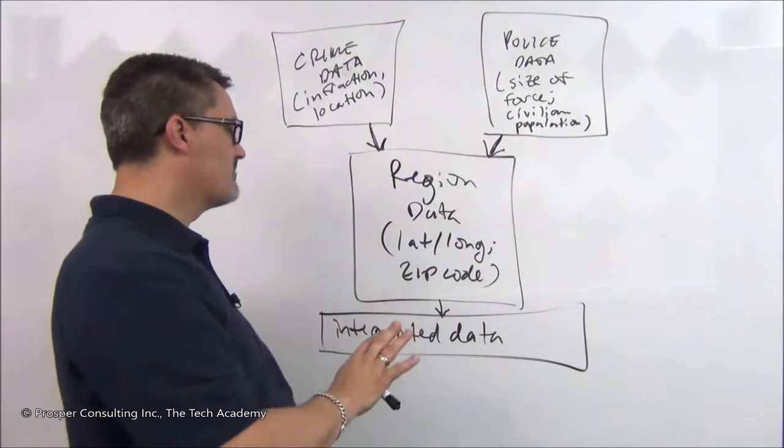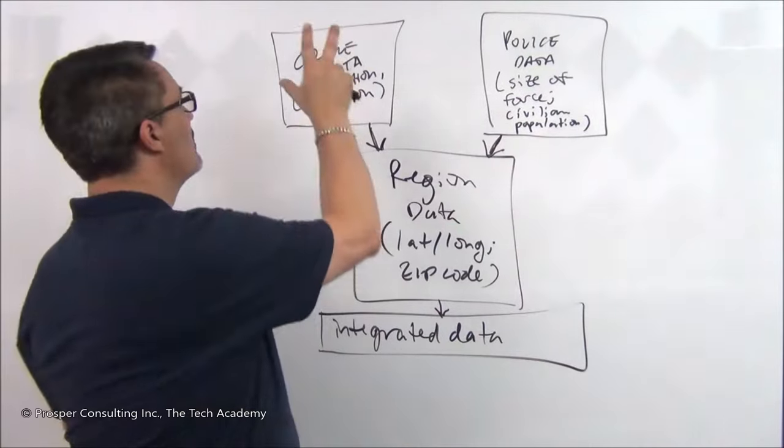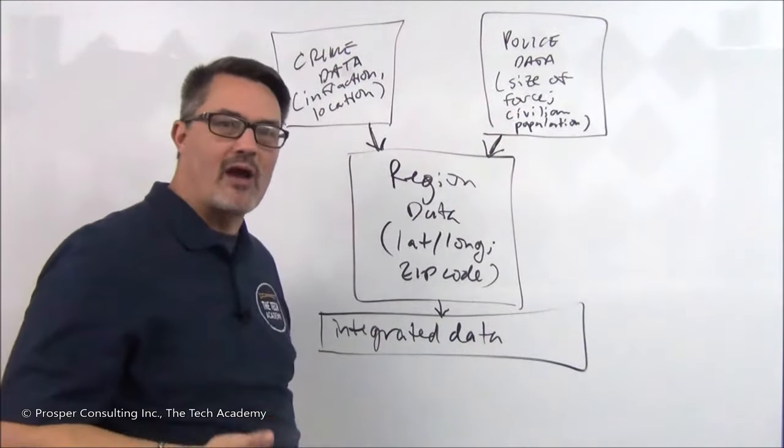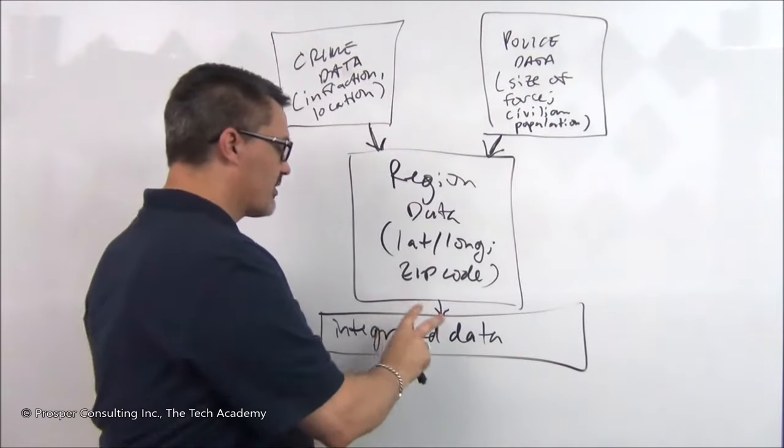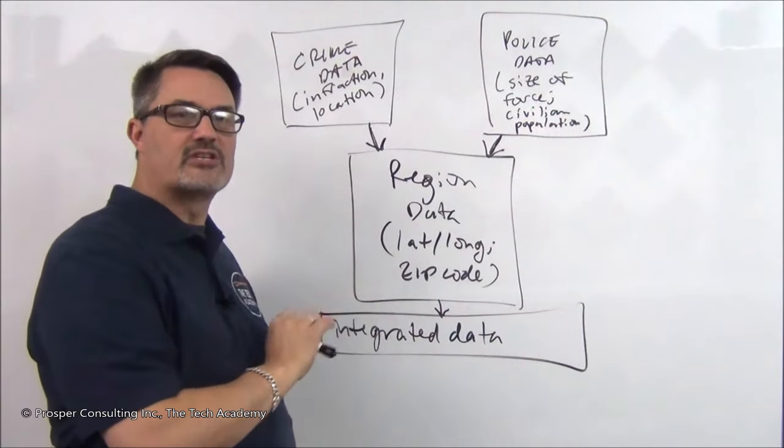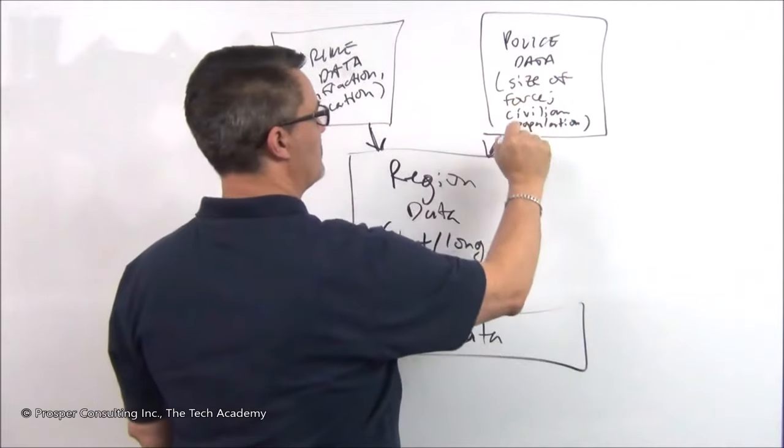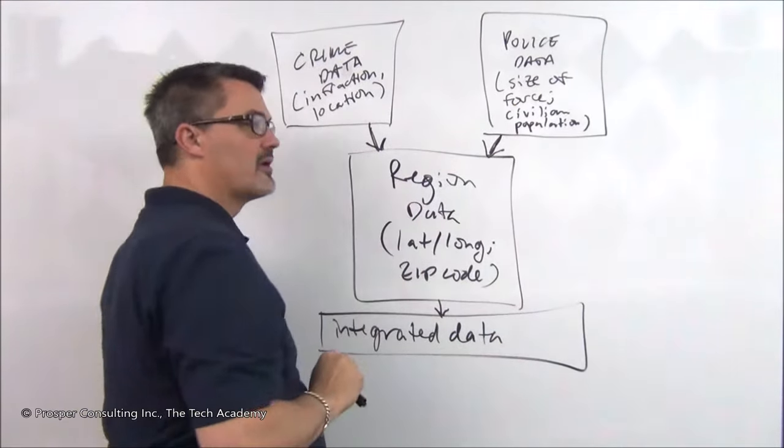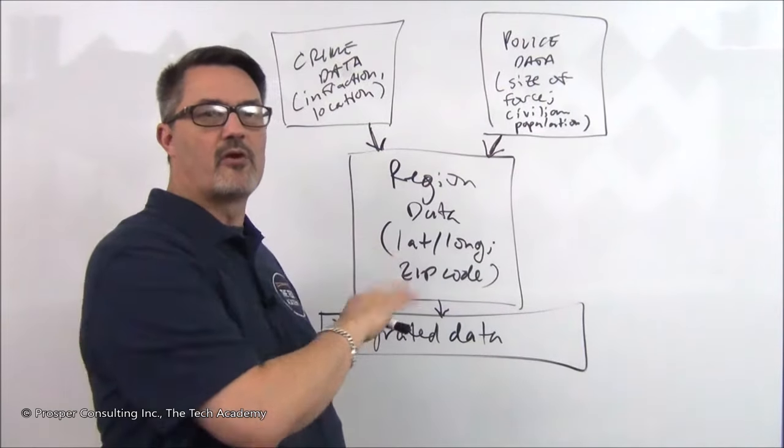Now, in one place, you have data where you're relating crime data and police data organized by geographical area. And at that point, you can start to do some actual real data analysis for what are the different relationships between size of police force, civilian population, types of infractions, where they occur. There's a simple scenario for data analysis.